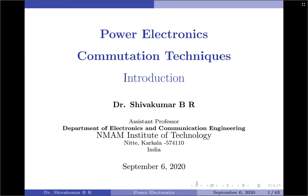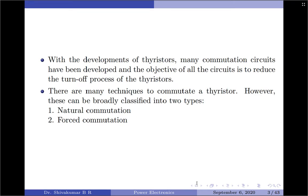A commutation circuit normally uses additional components to accomplish the turn off. With the development of thyristors, many commutation techniques and circuits have been developed, and the objective of all of the circuits is to reduce the turn off process of the thyristors. There are many techniques to commutate a conducting thyristor; however, these can be broadly classified into two types: natural commutation and forced commutation. Let us discuss each one of them in detail.